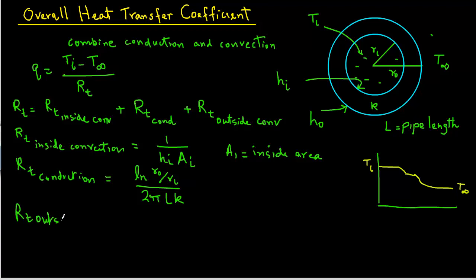The third item is thermal resistance due to outside convection. And that will equal 1 over Ho Ao. Where again Ao is the outside area.